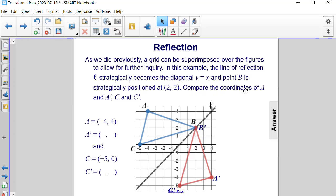Now, let's compare the coordinates of A and A prime as well as the coordinates of C to C prime and see if we can find a pattern for when points are reflected across the line Y equals X. So, we can see that the coordinates of point A are (-4, 4).